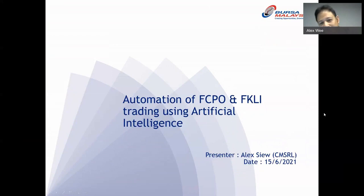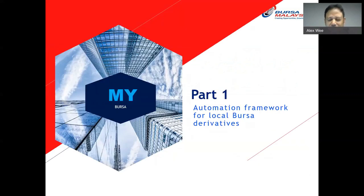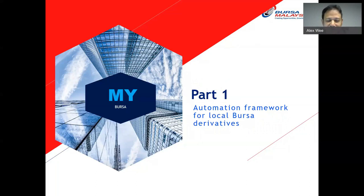Today's topic — automation of these two products using AI — is a very big topic. Let me break it down into smaller components. There are a few parts to my sharing. The first part is the infrastructure: what the current platforms are and how we can make things more interesting. Then I'll talk a bit about the strategy part, and later on, machine learning and AI. Let me start with Part One: Automation for local Bursa derivatives. This is not AI — this is how to automate. There is very little information out there, and when I first embarked on this journey of wanting to automate FCPO and FKLI, I had to go through certain API vendors and IT providers, but things have changed — now we have more and more choices.